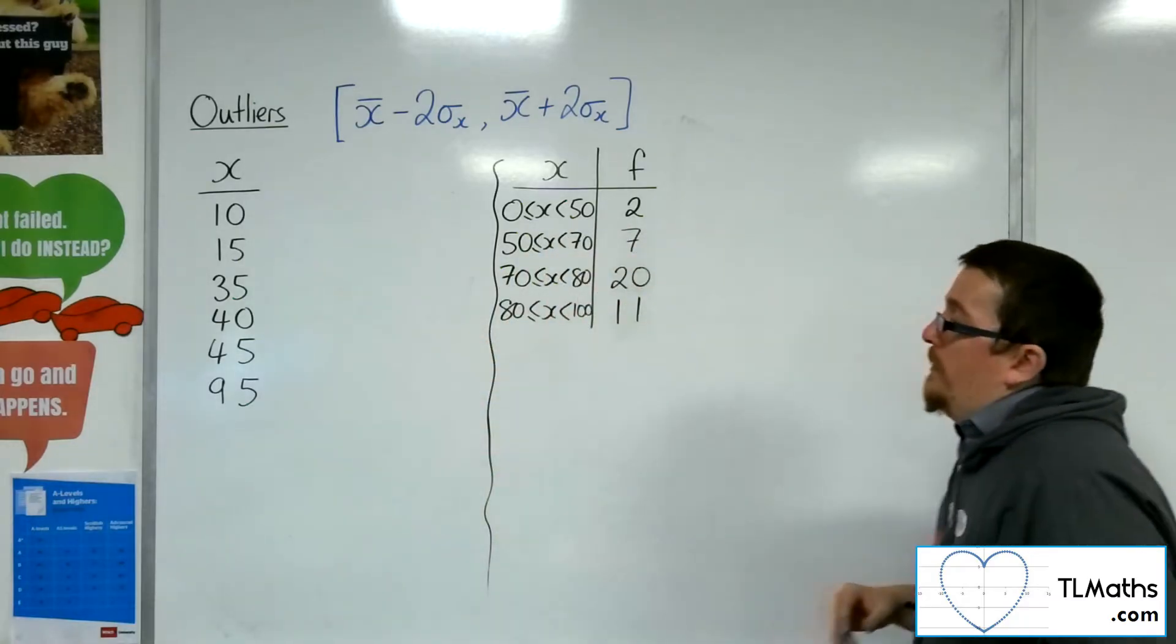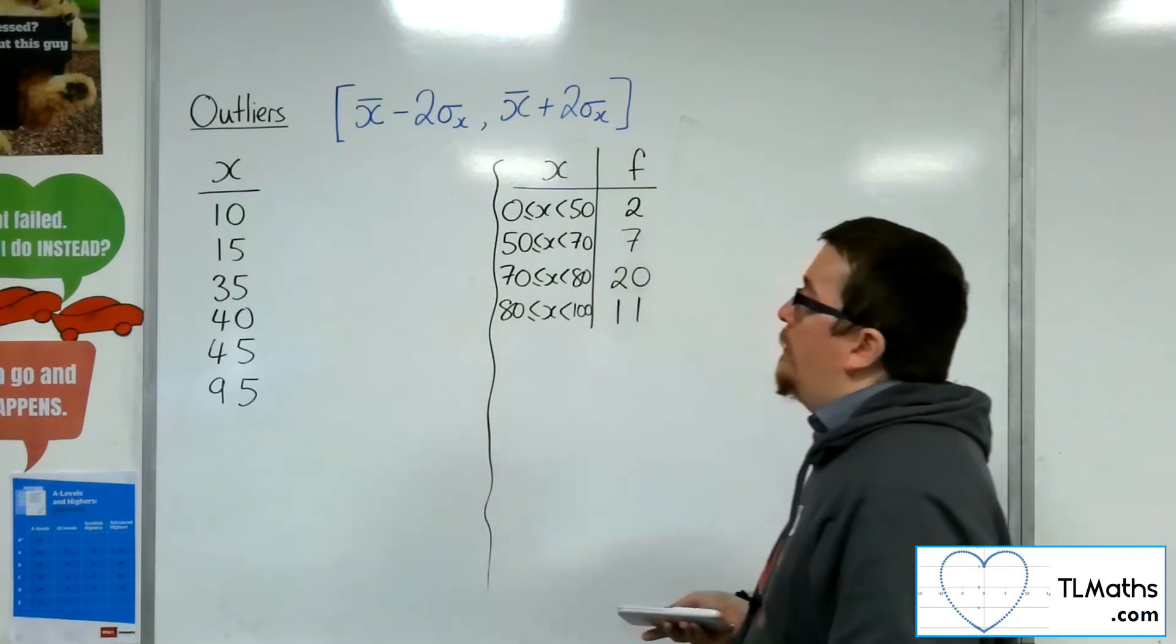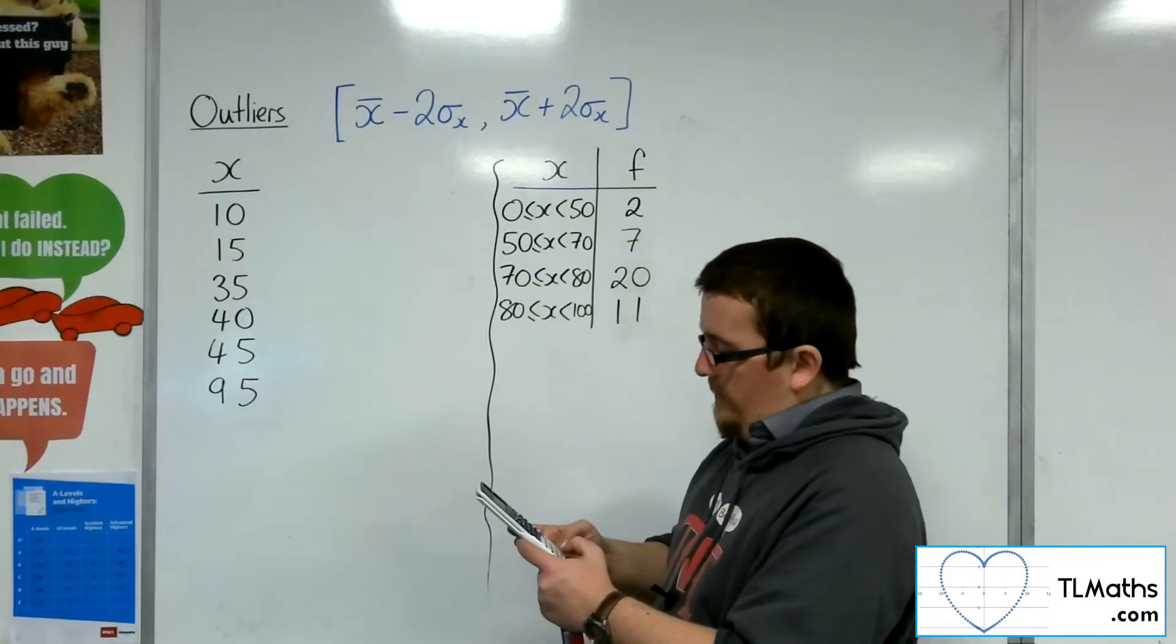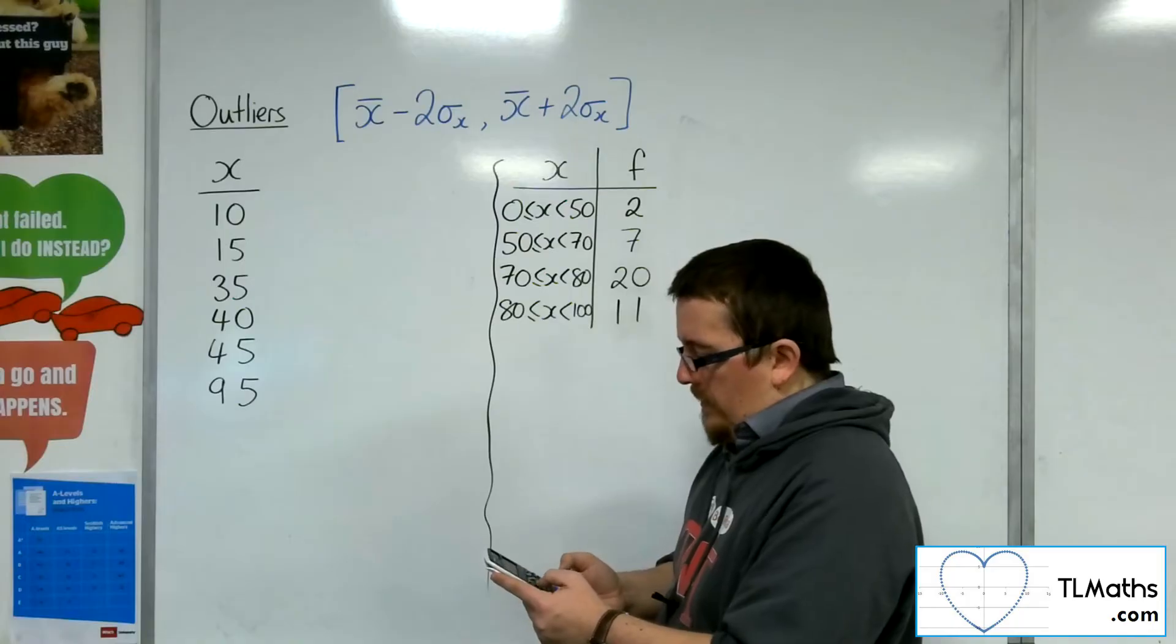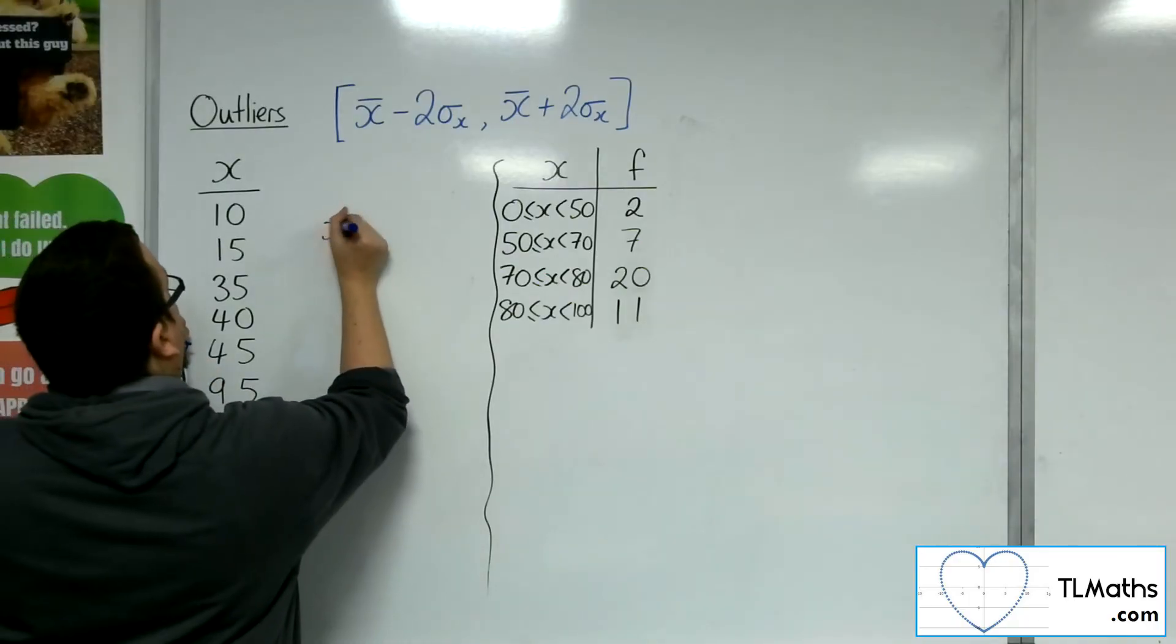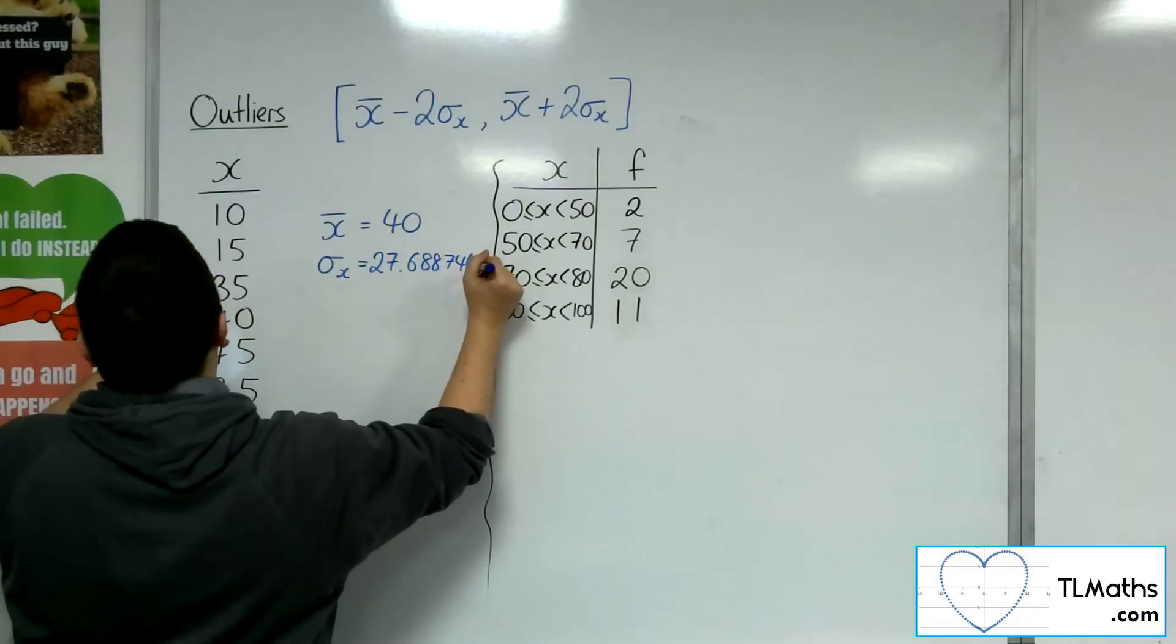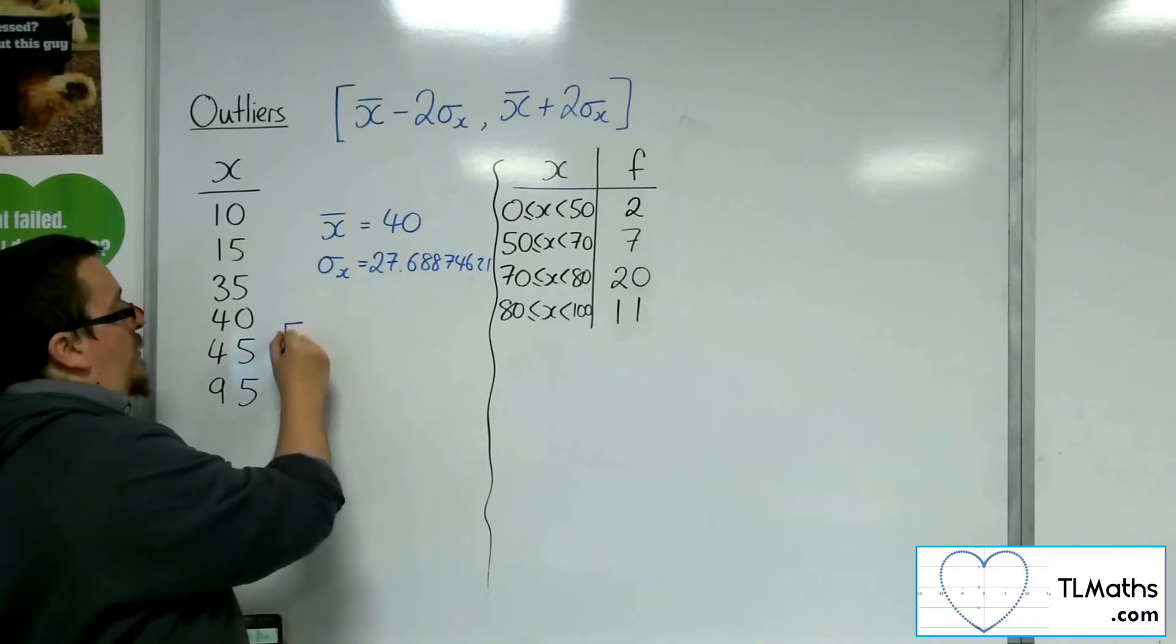Right, so I'm going to go straight in with this. So here is my six bits of data, and I need to find the mean and standard deviation. I'm going to go straight to the calculator with this. No messing around. So menu number six. We're on the Casio class whiz here. Number one for one variable. Now just type in the data: 10, 15, 35, 40, 45, and 95. Then option number three. So what are we getting? We've got a mean of 40 and a standard deviation of 27.68874621. I'm just going to write out full calculator display so that I can get these results as accurately as I can.